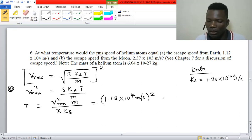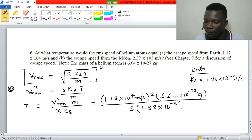From Earth, the escape speed is 1.2 × 10^4 m/s squared, and the mass we've been given is 6.64 × 10^-27 kg, and we divide by 3. This constant is 1.38 × 10^-23 joules per kelvin.